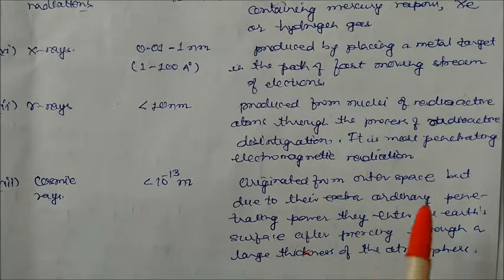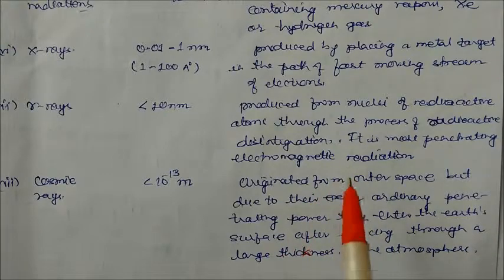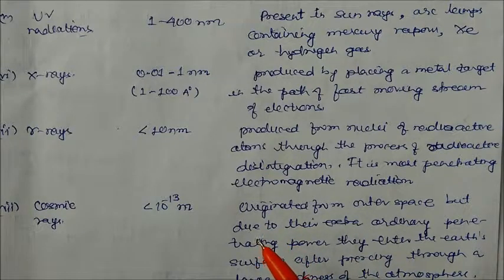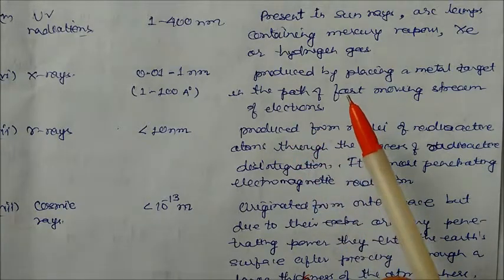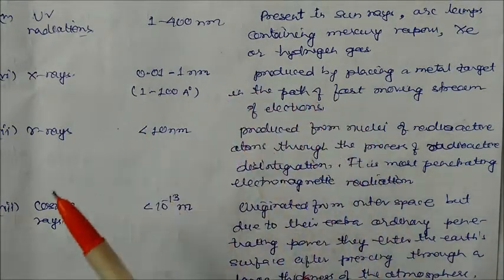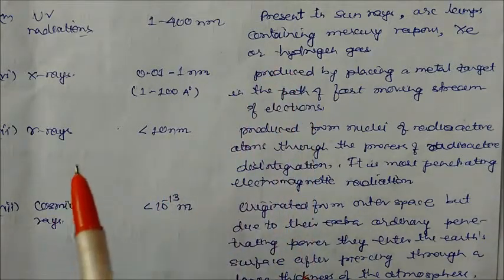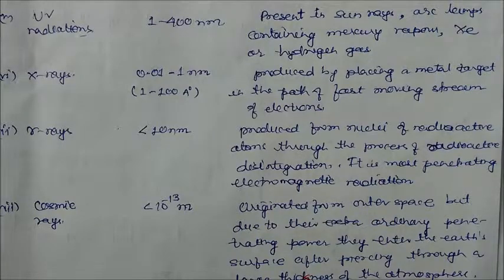Ultraviolet, X-rays, and gamma rays are all very harmful — exposure to large quantities can be fatal. Cosmic rays can also be deadly. We should be careful with all these radiations. Ultraviolet rays are naturally stopped by the ozone layer present in the atmosphere, which protects us.